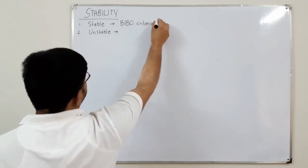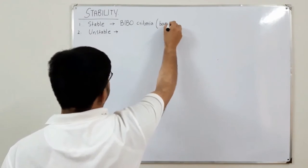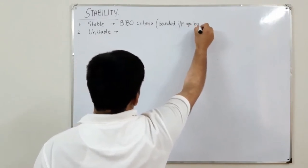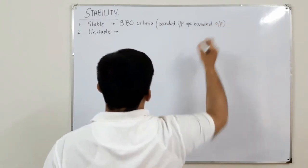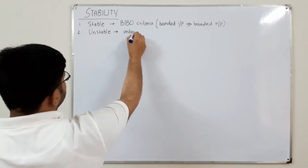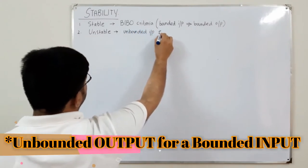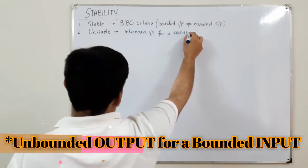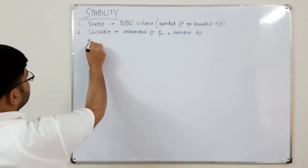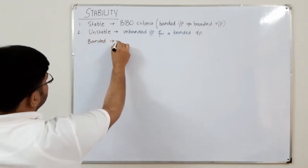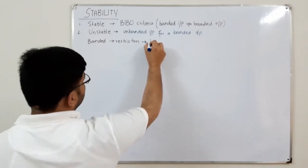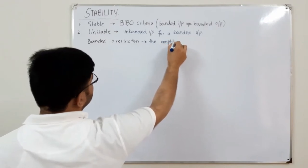BIBO criteria means that for a bounded input, we have a bounded output, whereas for an unstable system we have an unbounded output for a bounded input. The word 'bounded' refers to a restriction — there is a restriction on the amplitude of the input or the output. Bounded means that the amplitude is finite.